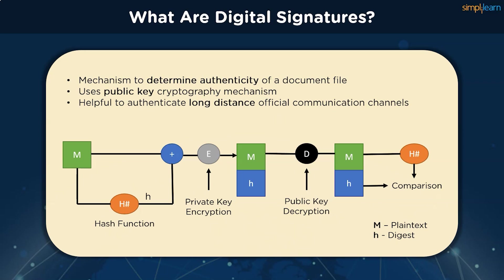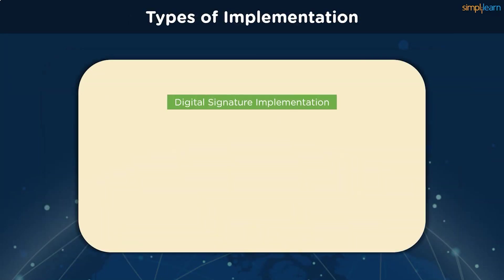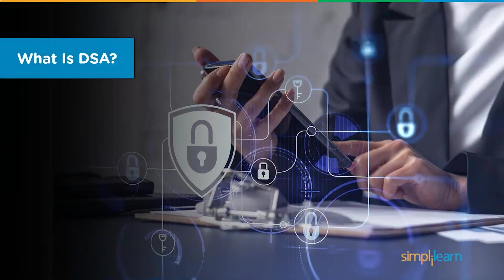Further, some non-repudiation schemes offer a timestamp for the digital signature, so that even if the private key is exposed, the signature is valid. To implement the concept of digital signatures in the real world, we have two primary algorithms to follow: the RSA algorithm and the DSA algorithm, but the latter is the topic of learning today. So let's go ahead and see what the digital signature algorithm is supposed to do.